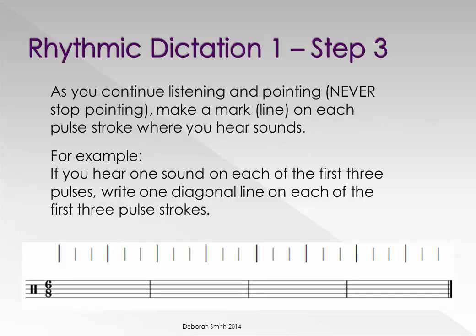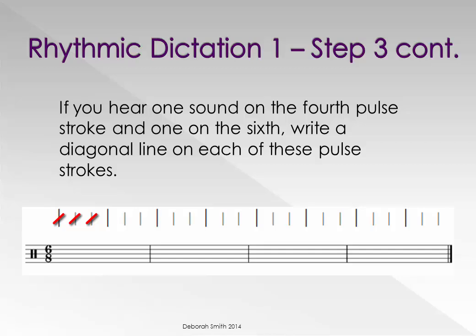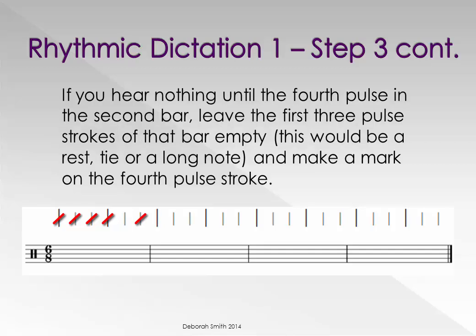As you continue listening and pointing, never stop pointing. Make a mark on each pulse stroke where you hear sounds. For example, if you hear one sound on each of the first three pulses, write one diagonal line on each of the first three pulse strokes like this. If you hear one sound on the fourth pulse stroke and one on the sixth, write a diagonal line on each of these pulses. If in the second bar you hear nothing until the fourth pulse, leave the first three pulse strokes of that bar empty — this will be a rest, a tie, or a long note — and make a mark on the fourth pulse stroke of that bar.